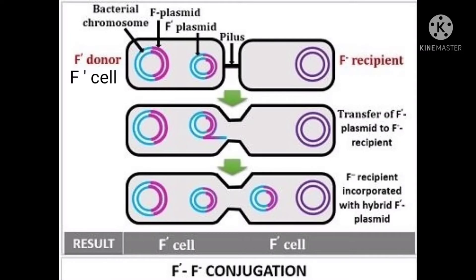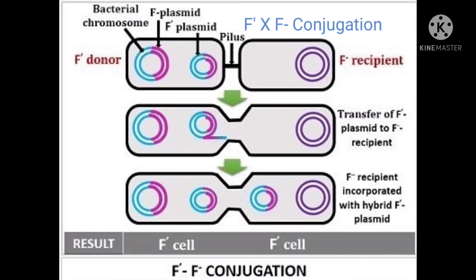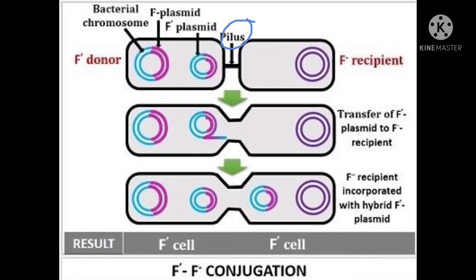When the F' cell transfers a copy of this F' plasmid into an F- recipient, then such type of conjugation is known as F' F- conjugation. Here the F' cell acts as a donor which contains an F' plasmid, and the F- cell lacks that plasmid. This donor and recipient cells are connected through a pilus. Even though this F' plasmid carries a small fragment of the main bacterial DNA, it is capable of carrying out normal rolling circle replication.